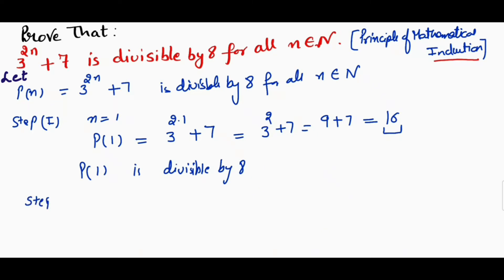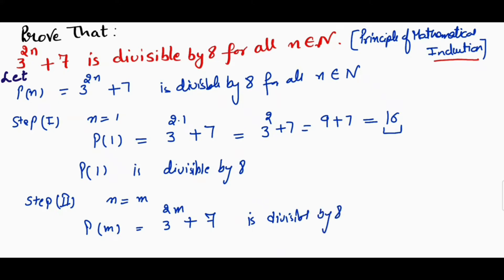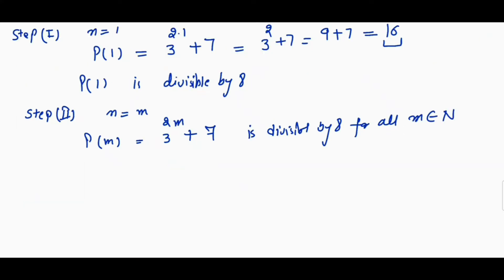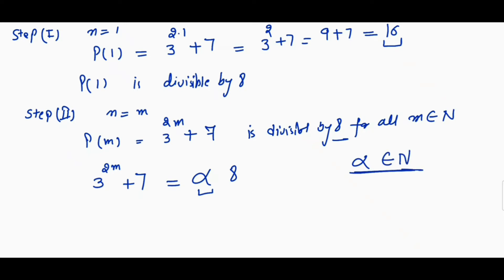Step 2: we will put n equal to m. Then this becomes 3 raised to the power 2m plus 7, and this is also divisible by 8 for all m belonging to natural numbers. I can write this as 3 raised to the power 2m plus 7 is divisible by 8, equal to 8α, where α is any natural number. We take this as equation 1.